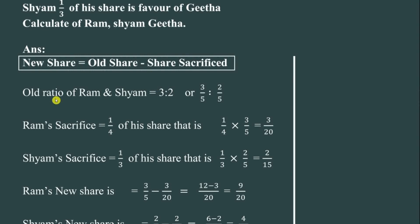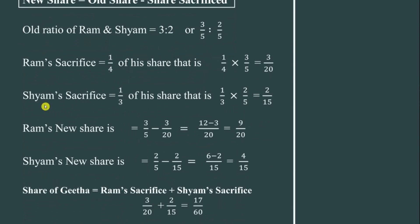The formula is: New share = Old share minus Share sacrificed. We have part of the share sacrifice. The old ratio is the smaller starting point. The old shares are 3/5 and 2/5. Ram's sacrifice is 1/4. So we need to calculate: 3/5 minus 1/4 — Ram's sacrifice is 1/4 of his old share.